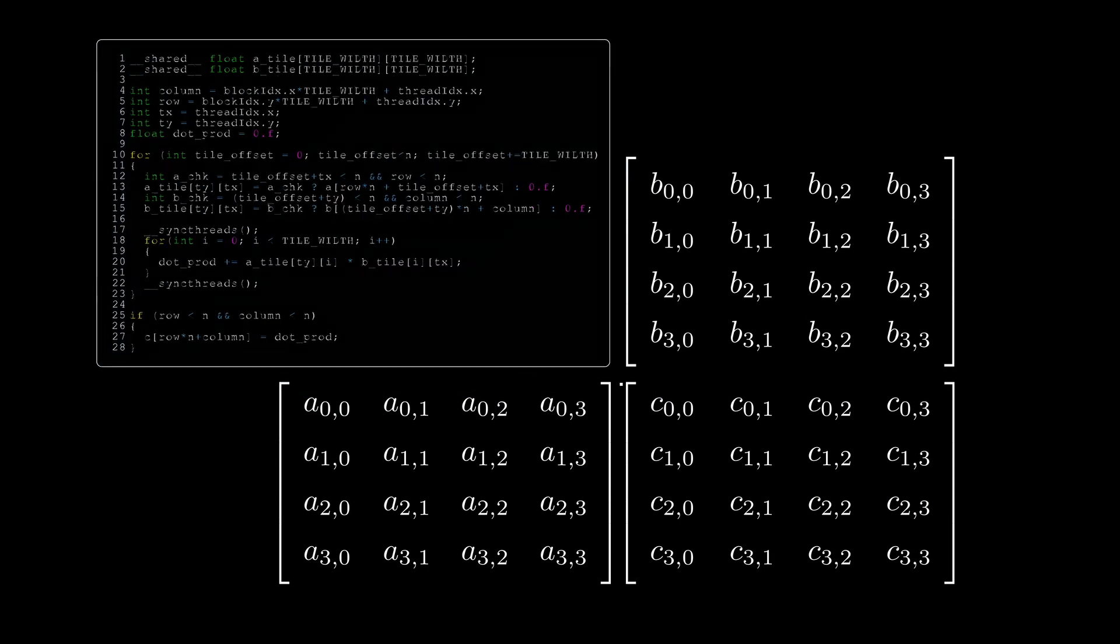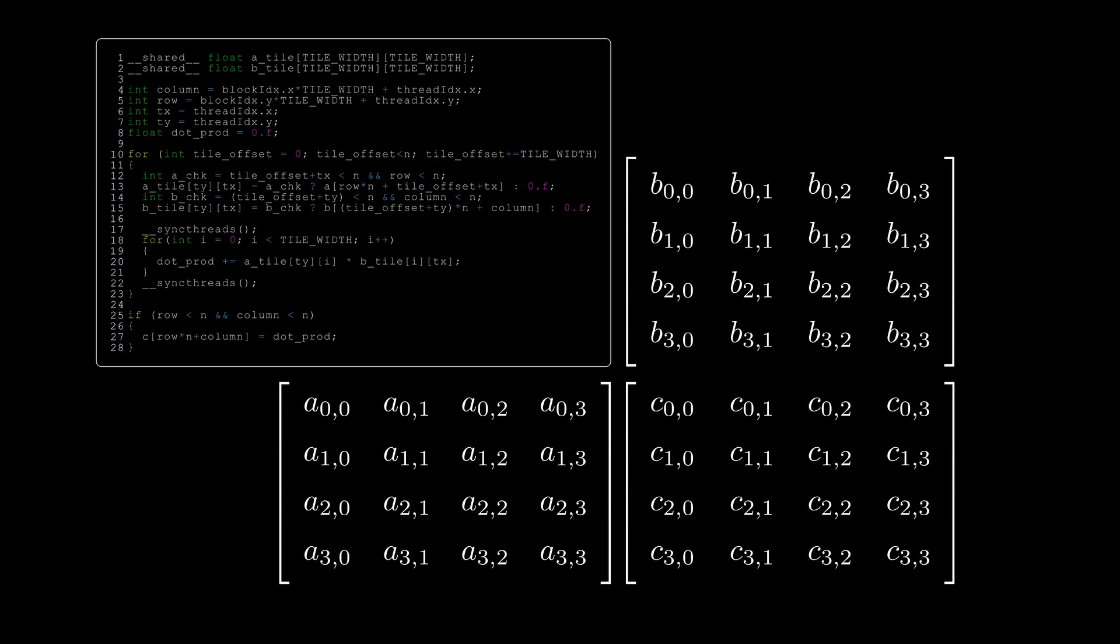Let's now go over the code that we will use to achieve this. We first need to initialize our tiles in shared memory. Then, we calculate the row and column of the output element associated with the current thread. We save the thread indices to variables for ease of access later, and we create a variable that will store our dot product.